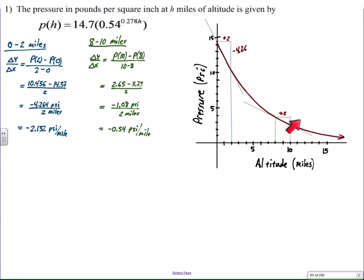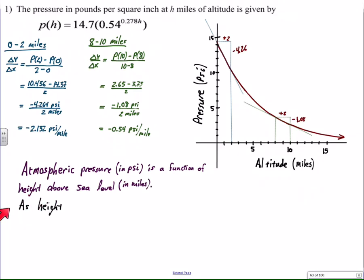So what I see is the atmospheric pressure decreases as we increase our altitude, but at a decreasing rate. Faster early on, slower later on. So here's how I write my answer. I start with the function variable relationship. Atmospheric pressure is a function of height above sea level in miles. Next, I talk about what happens to the pressure as height increases. As height increases, the pressure from the atmosphere decreases.